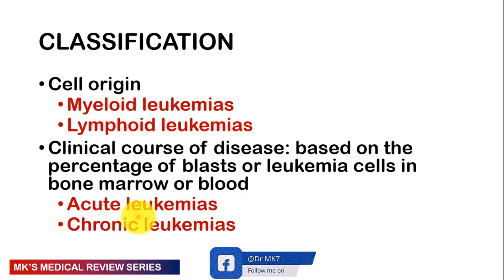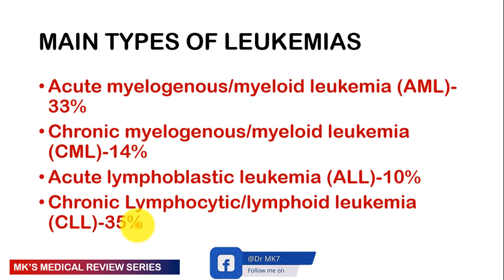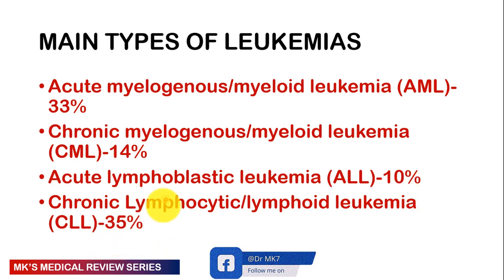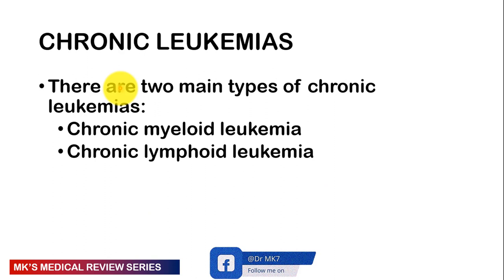The four main types of leukemias are: acute myelogenous leukemia, the most common at 33%; chronic myelogenous leukemia at about 14%; acute lymphoblastic leukemia at 10%; and chronic lymphocytic leukemia, which actually accounts for about 35%. We already discussed the acute variants. Today we're focusing on chronic leukemias, beginning with the two main types: chronic myeloid leukemia and chronic lymphocytic leukemia.